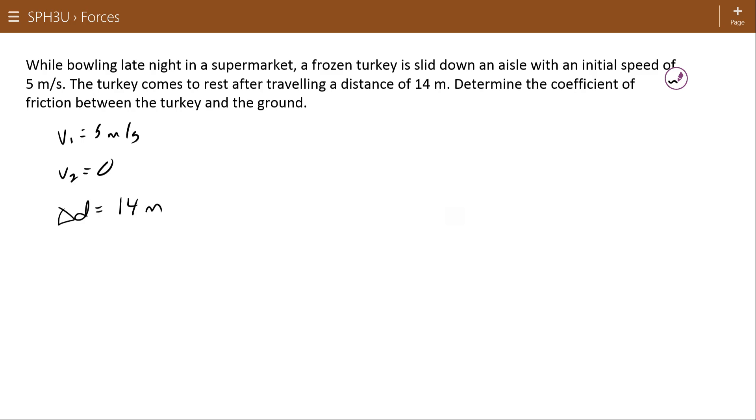So, what I have here is I have some motion information. Again, in this unit, if we have motion information, we're almost always looking for acceleration. And that allows us to connect to Newton's second law. We should be careful with our sawings here. Because this acceleration is going to work out to be negative. And that's representative of the fact that the turkey is slowing throughout this motion. It was given some initial speed and slid to rest.